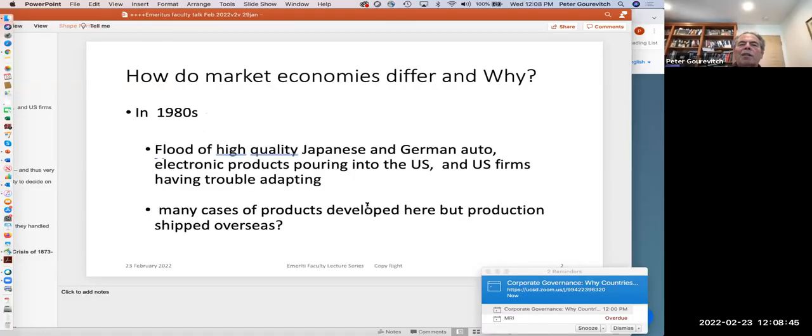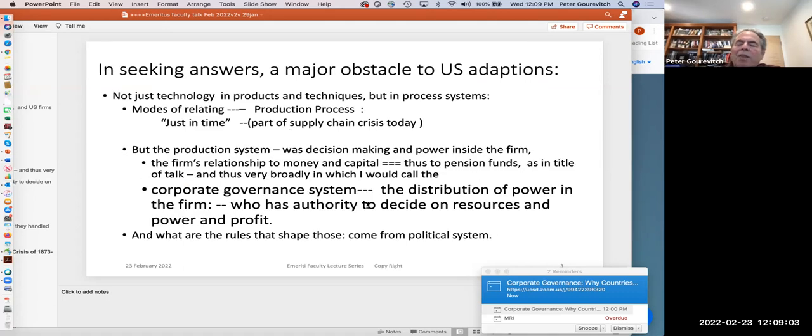So here's my question: Why do market economies differ, and why? Let me explain my thought on it. In the 1980s, we had a flood of high-quality Japanese and German auto and electronic products flooding into the U.S., and U.S. firms having trouble adapting. We had many cases of products being developed here, and then the production shipped overseas. In seeking answers, the major obstacle to U.S. adaptation struck me.